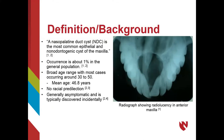The nasal palatine duct cyst is the most common epithelial and non-odontogenic cyst of the maxilla and occurs in about 1% of the general population. They occur at any age, although most are commonly reported between the ages of 30 and 50, with an average age of about 47 years. The nasal palatine duct cyst shows no ethnic predilection and is typically asymptomatic, discovered incidentally during routine oral or radiographic examination.